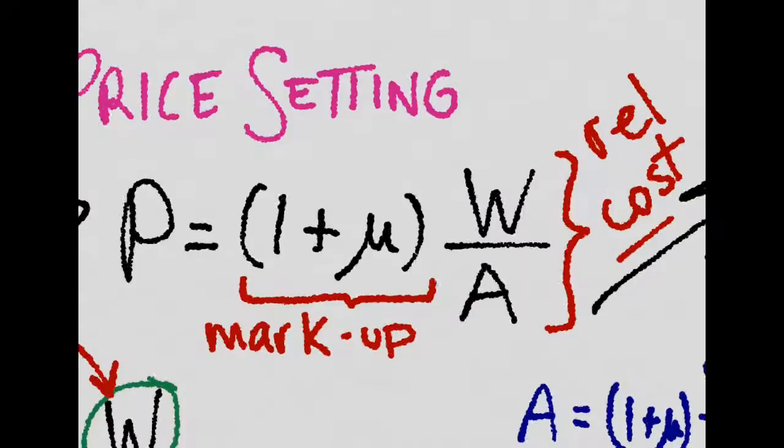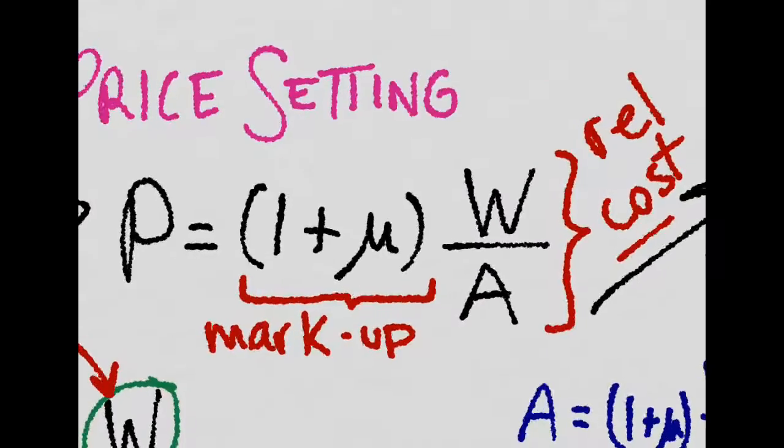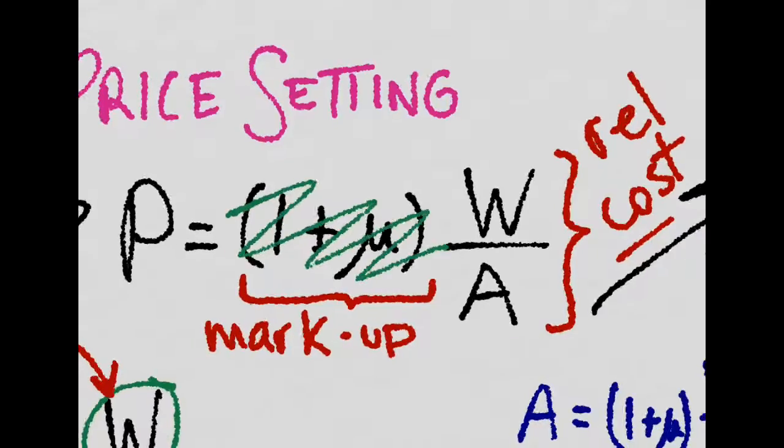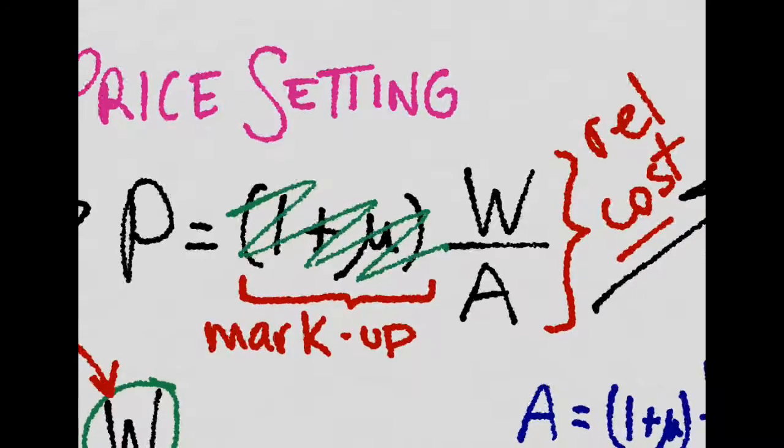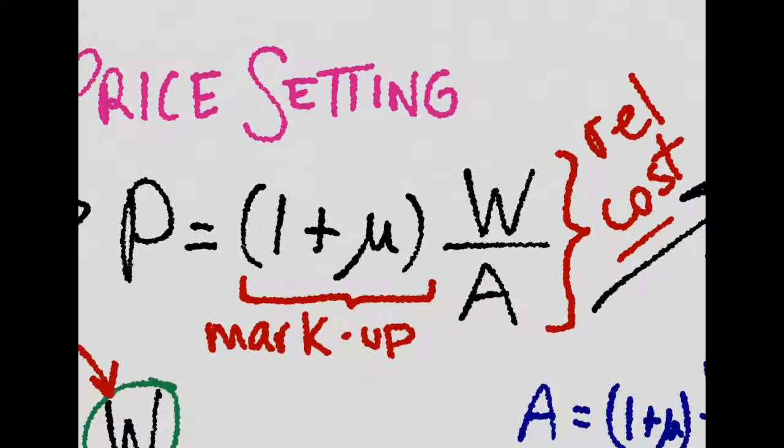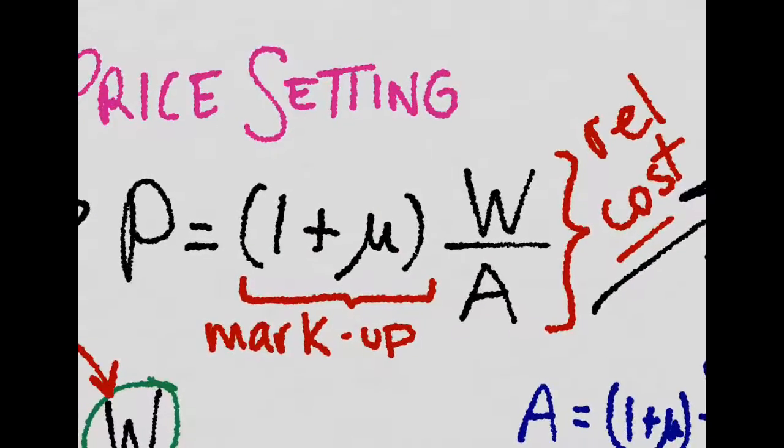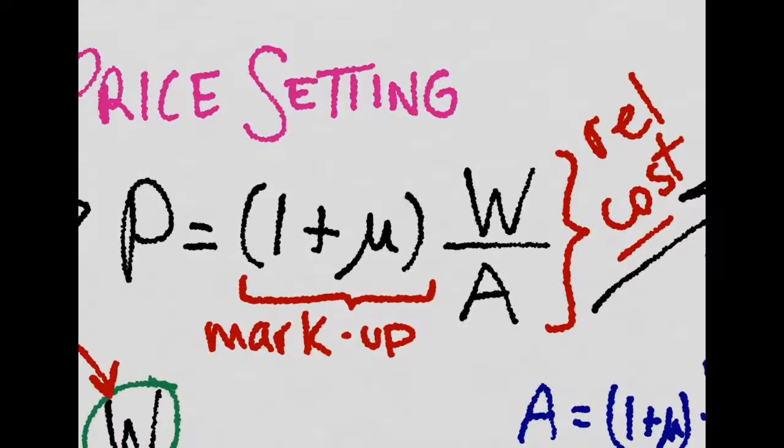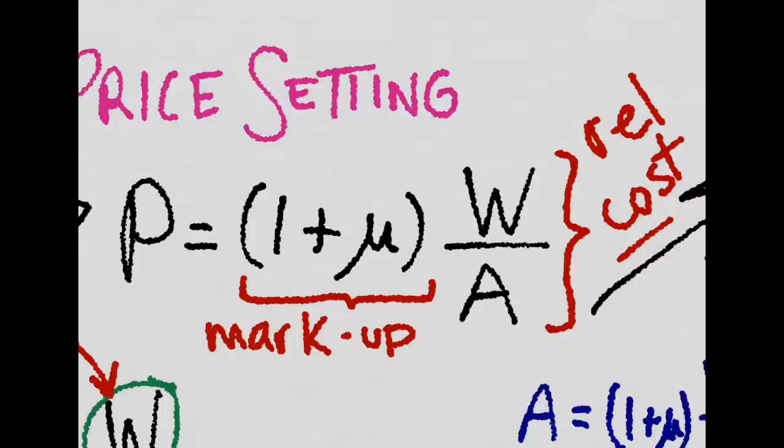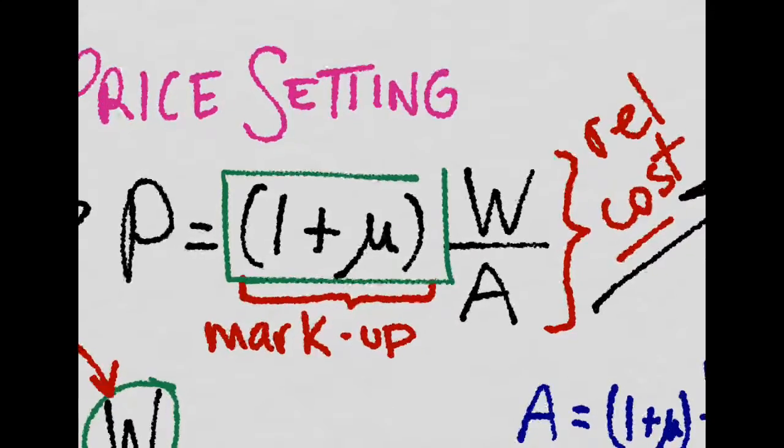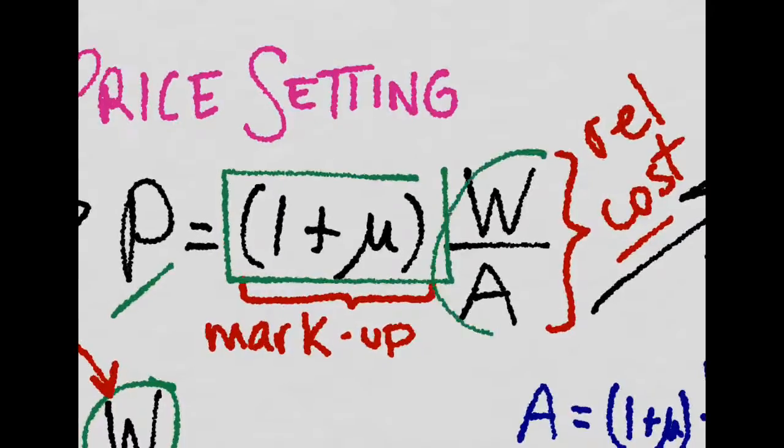If we were in a perfectly competitive world, theory tells us that the prices will just be equal to the costs, and there will be no profits. But in the real world, with imperfect competition in the market, firms do have profits. The profits are given by this markup they charge in prices over costs.